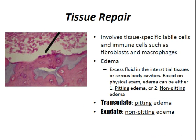Tissue repair involves tissue-specific labile cells and immune cells such as fibroblasts and macrophages. Labile cells divide actively throughout life to replace lost cells — such as epidermis, gastrointestinal mucosa, genitourinary tract surface cells, and hematopoietic cells of the bone marrow. Stable cells undergo few divisions but are capable of division when activated — examples include hepatocytes, renal tubular cells, smooth muscle, cartilage, endothelium, and osteoblasts.